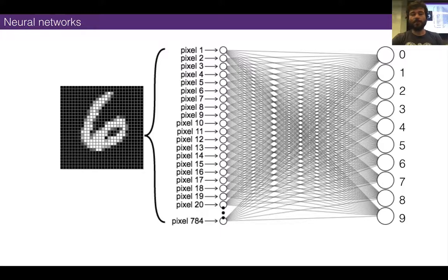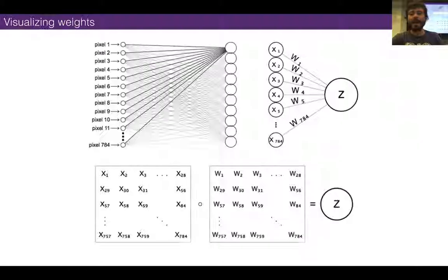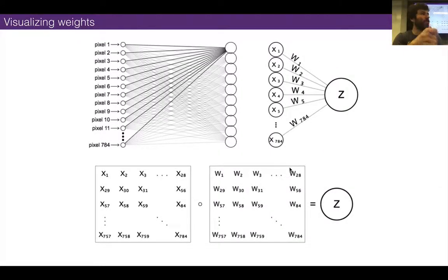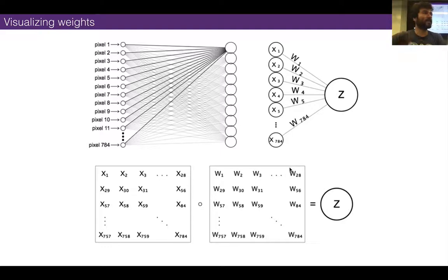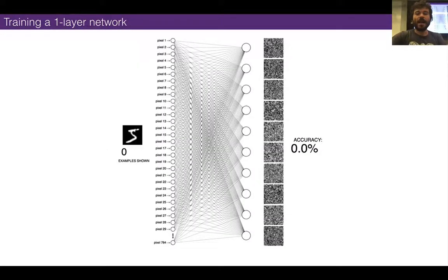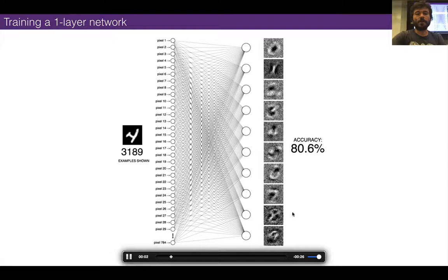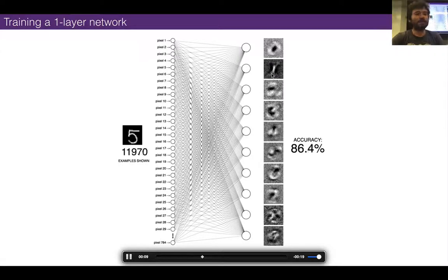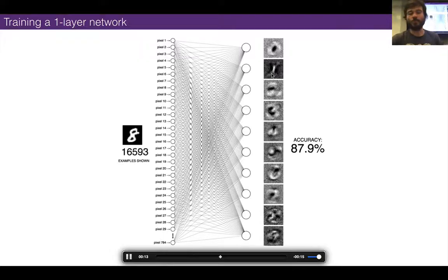Just remember the whole idea: neural networks are feature extractors. At each layer, they have these feature extractors. In a one-layer neural network, the feature extractors are just the classes themselves because it doesn't have any time to do something more detailed or compositional. In a two-layer neural network, it might abstract it a little bit.